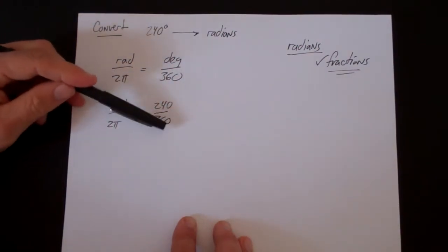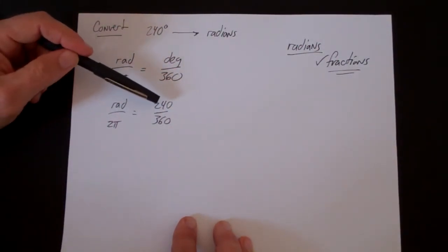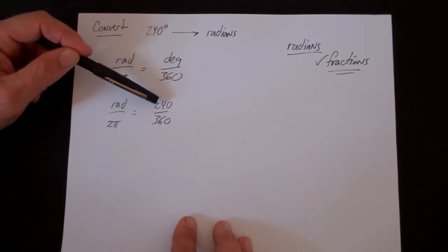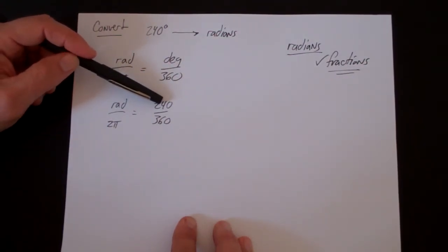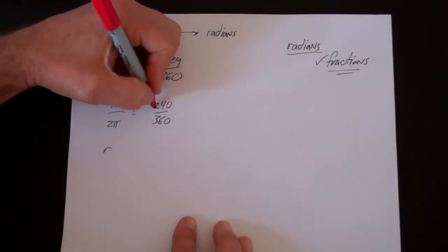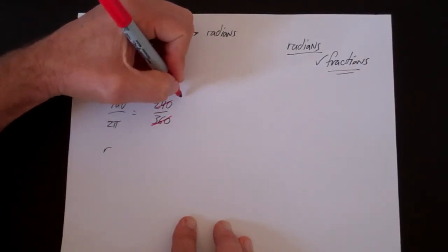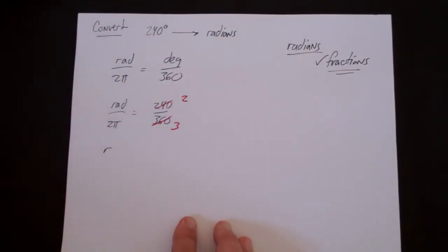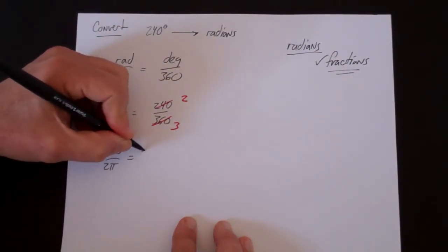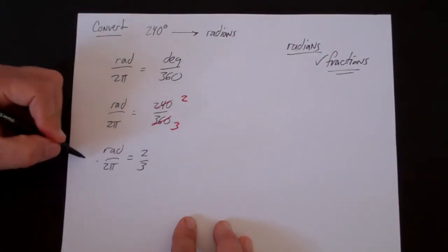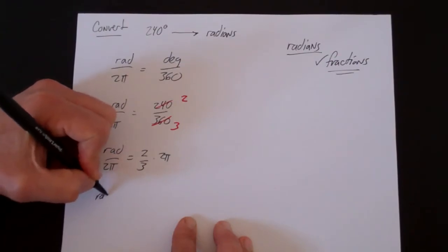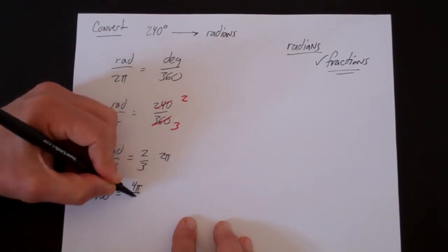I notice that 120 goes into both 240 and 360. Let me double check: 120 times 2 is 240 and 120 times 3 is 360 — that works. Dividing each by 120 gives 2 and 3, so radians over 2 pi equals 2 thirds. Multiplying both sides by 2 pi, radians equals 4 pi over 3.